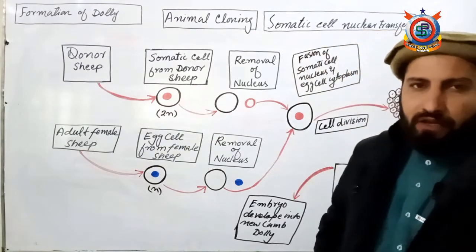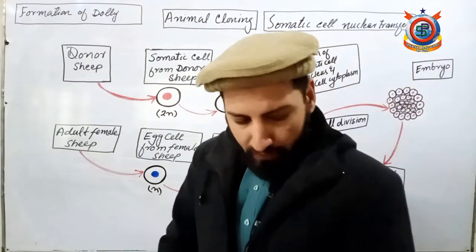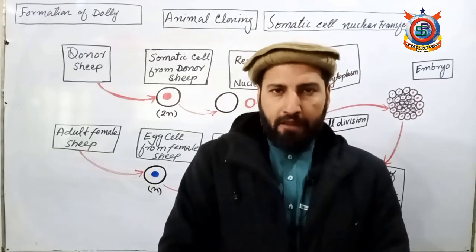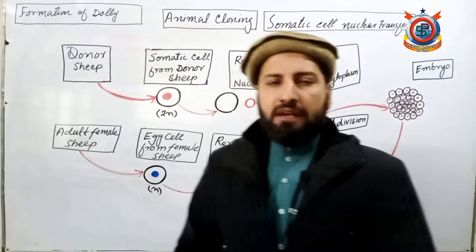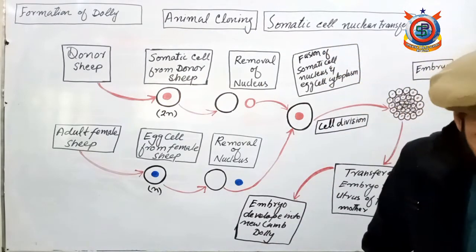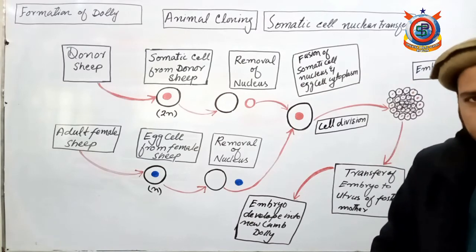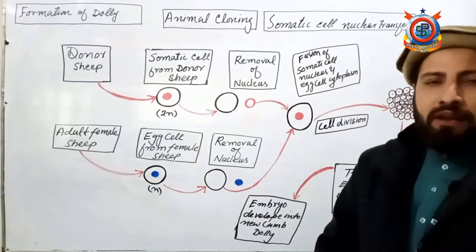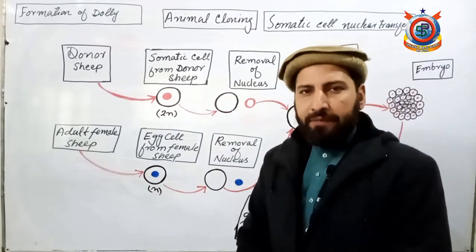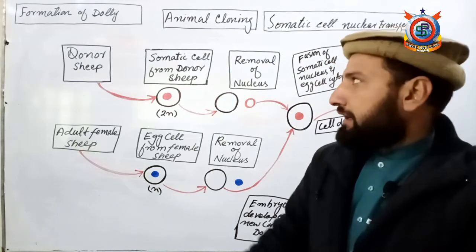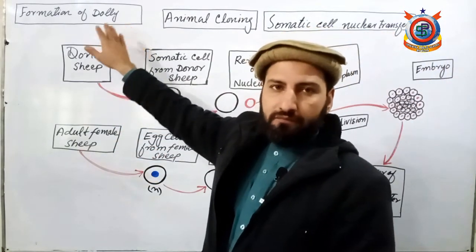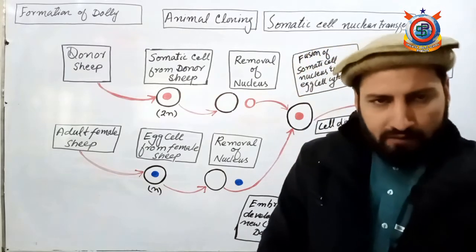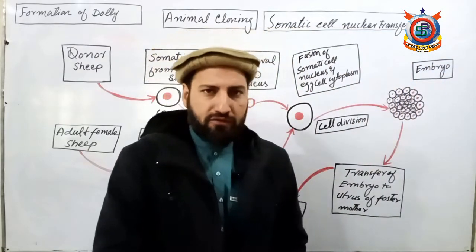Achievements in the field of genetic engineering mein ek achievement animal cloning padha tha. Aur is par maine aapko bataya tha ke is par main ek alag video lecture karunga. To animal cloning par hamari alag video lecture hai. Sab se pahle animal cloning successfully ki gayi fifth July nineteen ninety-six mein, jab ek lamb banaya gaya tha jis ka naam tha Dolly — yani ek sheep ka bachcha. Abhi tak bahut sare animals ko clone kiya ja chuka hai.